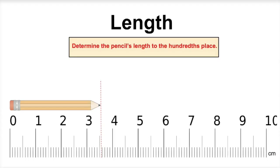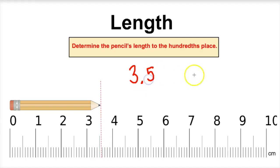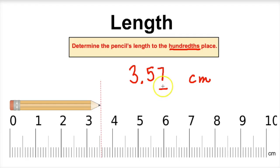Let's take a look at another one. To determine the pencil's length to the hundredths place — we know with 100% certainty that this pencil is going to be 3 centimeters in length. We can also see 3.1, 3.2, 3.3, 3.4, 3.5, and it's not quite 3.6. So we know with 100% certainty that the pencil here is 3.5 centimeters. However, we want the hundredths place, so we have to get close and estimate. It looks a little past the halfway point, so we'll call this 3.57 centimeters. That hundredths place has a level of uncertainty.